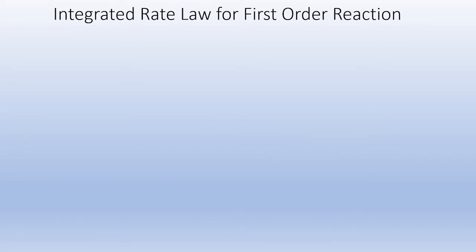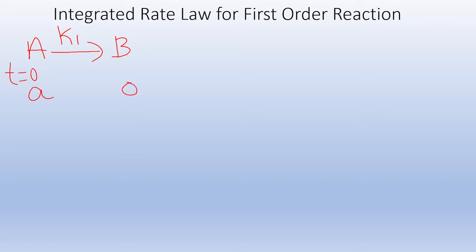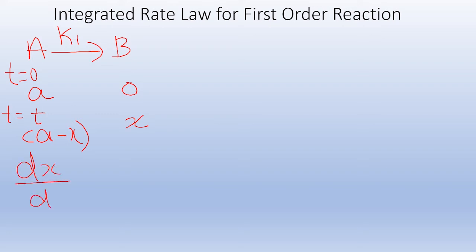First of all, let us discuss the integrated rate law expression for first order reaction. For a general first order reaction of the type A giving B with a rate constant k1, at time t equal to 0, let A be the concentration of reactant and 0 be the concentration of product. After a time t seconds, if x amount of product is formed, the concentration of reactant after time t is A minus x. So the rate law expression can be written as: instantaneous rate dx/dt equals k1 into (A minus x).